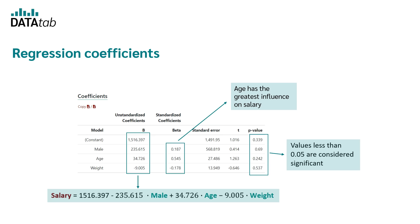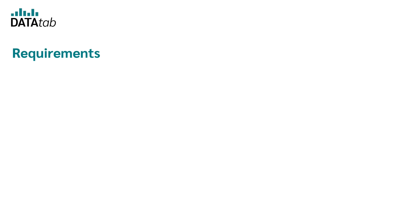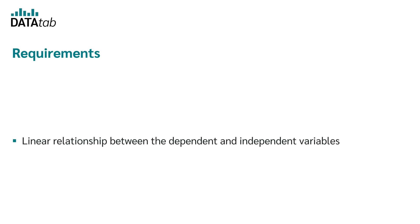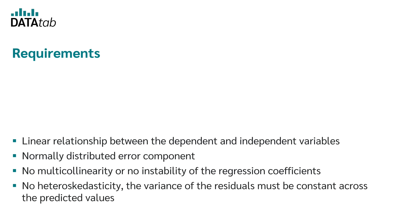Due to the very small dataset used, it's difficult to reach significant values. When calculating a regression analysis, you also have to check the assumptions. If the assumptions are not fulfilled, you cannot interpret the results meaningfully. The assumptions for linear regression are: there must be a linear relationship between the dependent and independent variables; the error epsilon must be normally distributed; there must be no multicollinearity; and there must not be heteroscedasticity — the variance of the residuals must be constant over the predicted values.